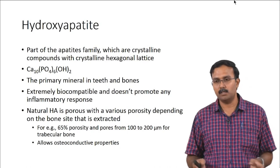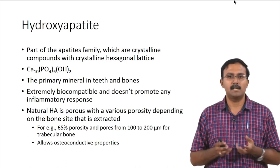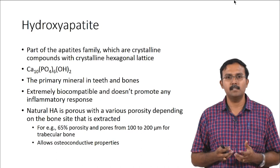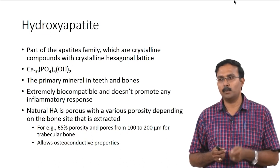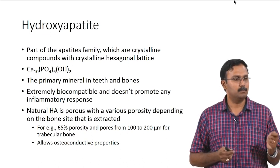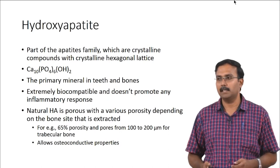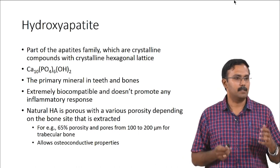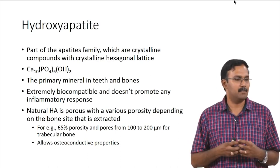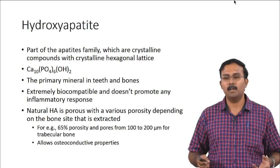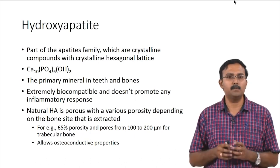Hydroxyapatite is the most commonly used material today. Hydroxyapatites are part of the apatite family — crystalline with a hexagonal lattice. They have the chemical formula Ca10(PO4)6(OH)2 with a calcium-to-phosphorus ratio of 1.67, which is characteristic of hydroxyapatite. Hydroxyapatite is what is present in your body — the mineral in your bone and teeth is hydroxyapatite. Because of this it is extremely biocompatible, does not cause any inflammatory response, and can be used for bone and dental tissue engineering without any issues.